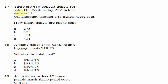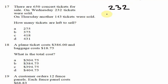Question 17: there are 650 concert tickets for sale. On Wednesday, 232 tickets were sold. On Thursday, another 143 tickets were sold. How many tickets are left? First, we need the total tickets sold, so we add 232 plus 143.